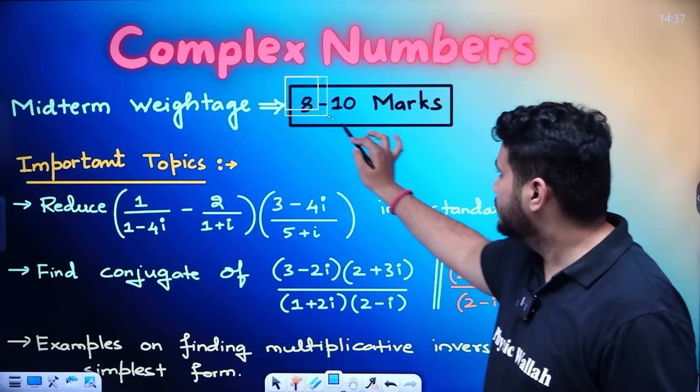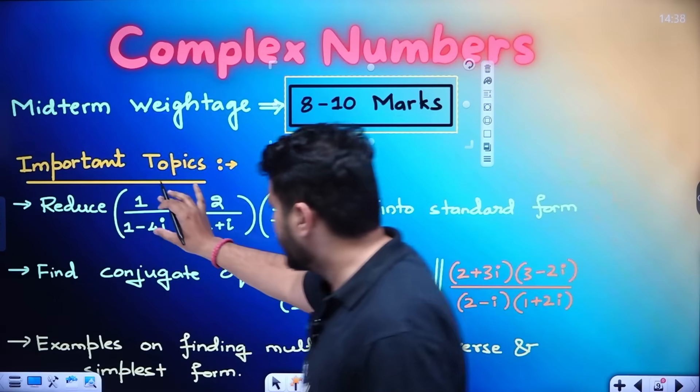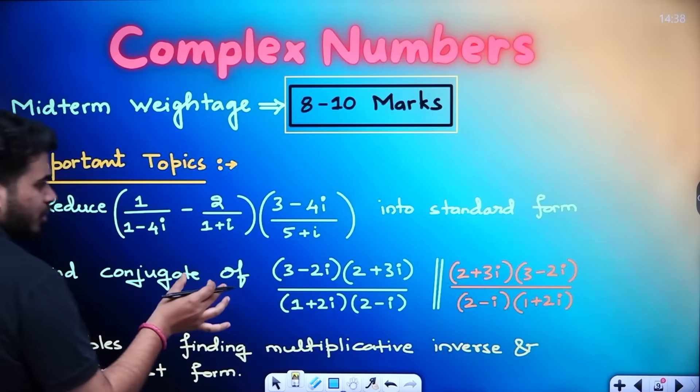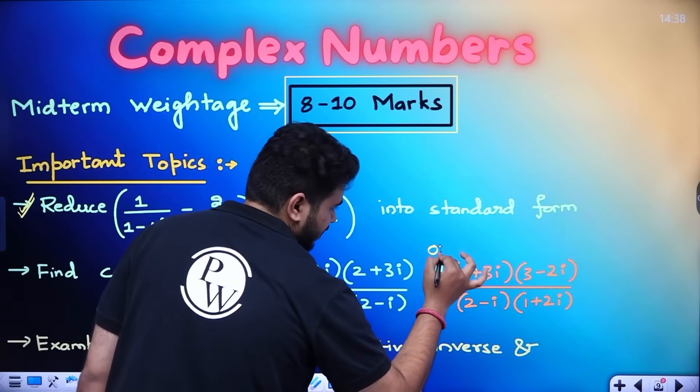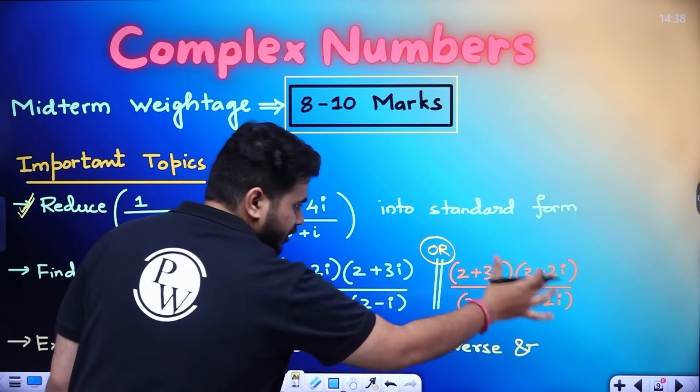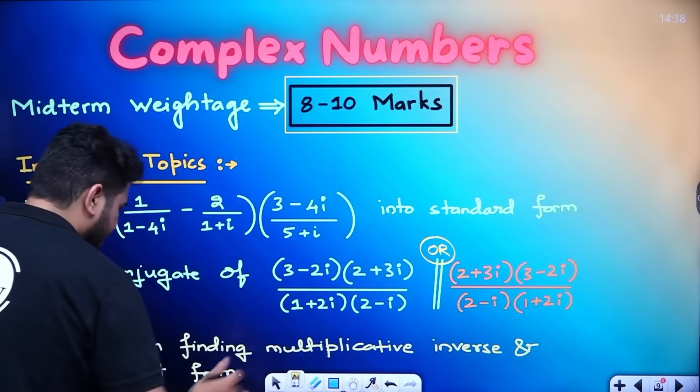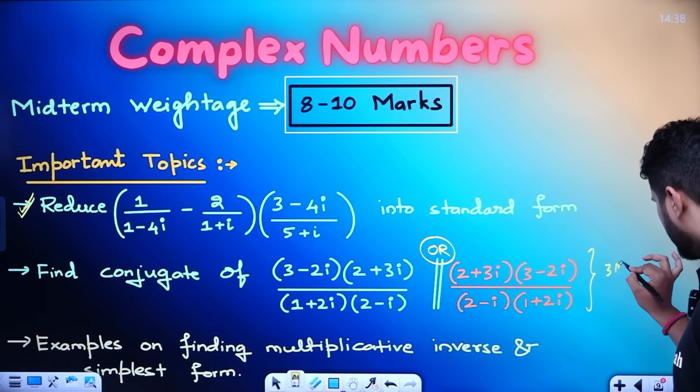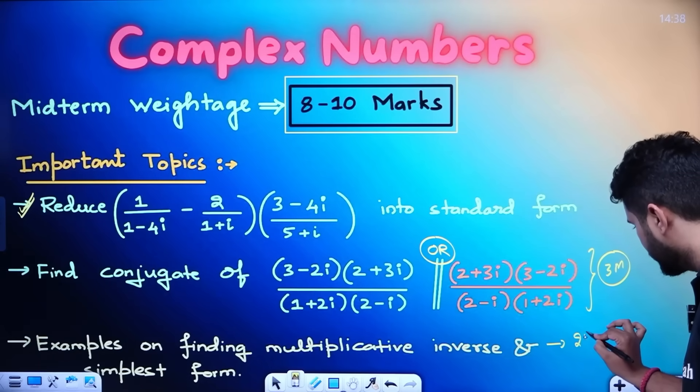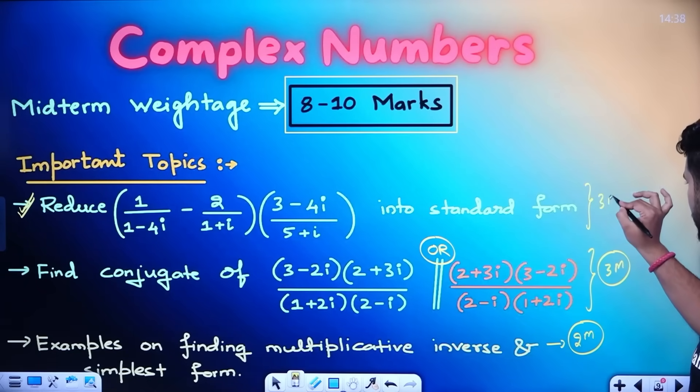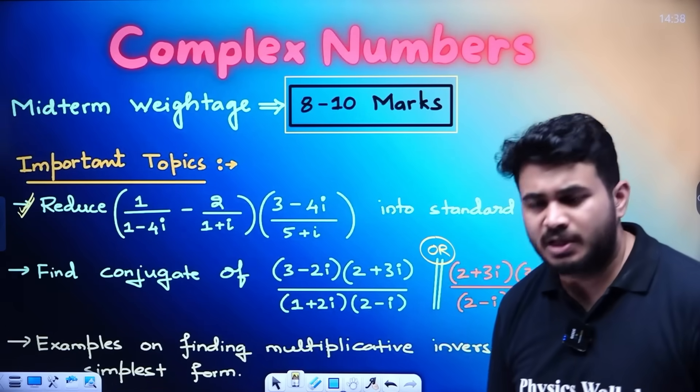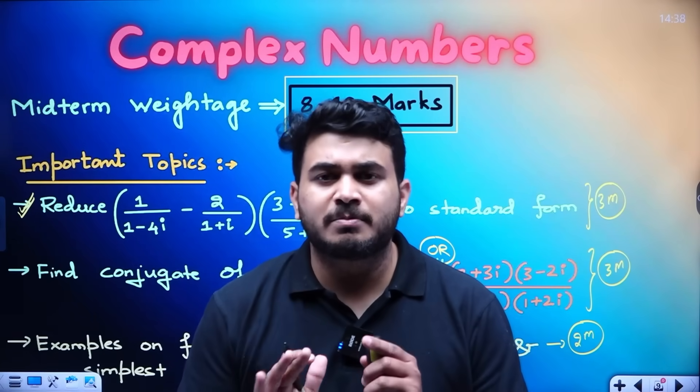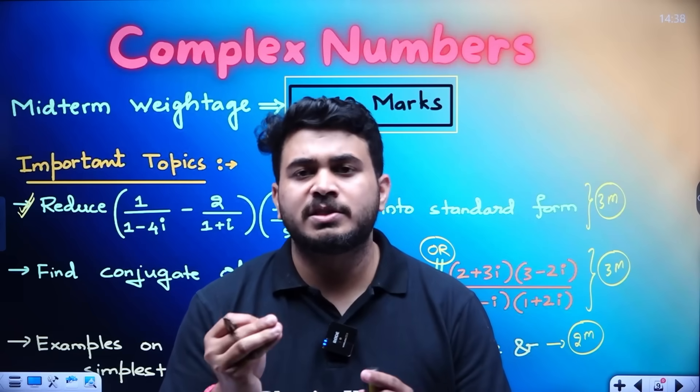Complex. Complex. Its weightage is 8 to 10 marks over here. Important topics. Reduce 1 by. This is one important question over here. Important questions. This question. Find the conjugate of this or this. Either you will get, you need to find the conjugate of this or you need to find the conjugate of this. And finding examples on finding multiplicative inverse and expressing in simplest form. 2 marks question. Either 1 by 2. This is your 3 marks. This is your 3 marks. And here, we have 2 marks. And in this way, 8 to 10 marks will be there. And along with this MCQs. MCQs practice. You can practice it from your previous year questions. Because, complex number, just if you practice previous year question papers in the MCQs.